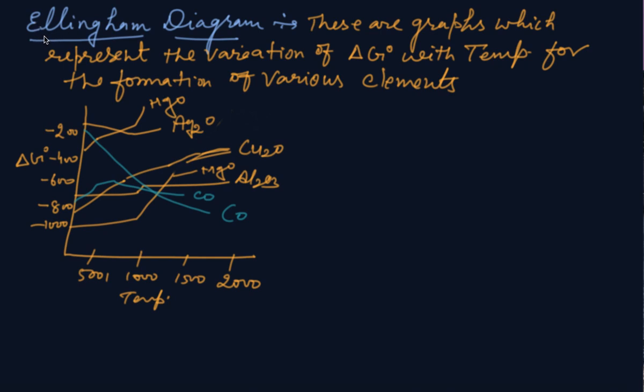My dear students, now the last topic is the Ellingham diagram. These are graphs which represent the variation of Gibbs free energy with temperature for the formation of oxides of various elements. If we ask you which element could be extracted from the oxide...